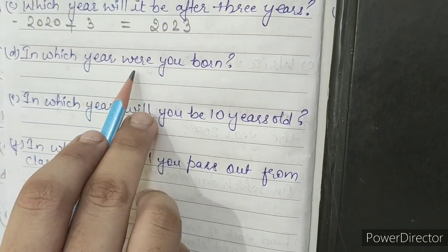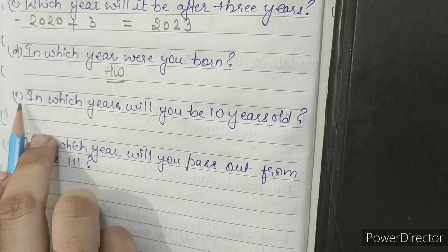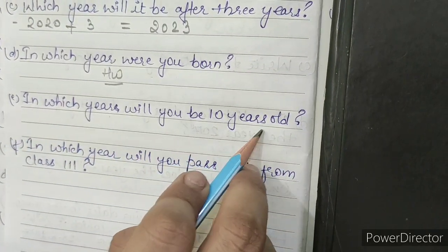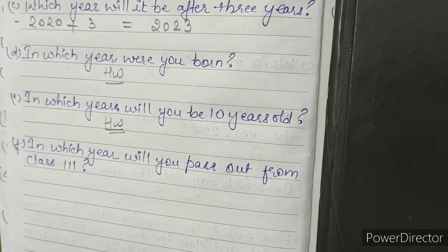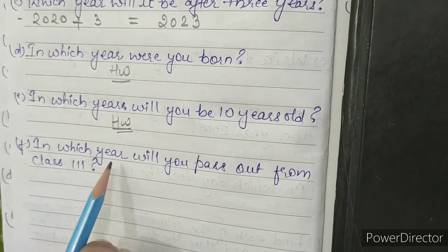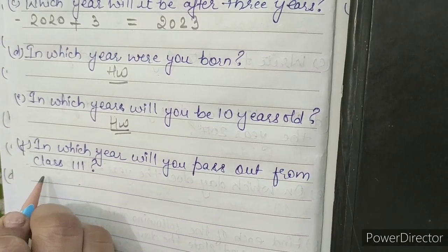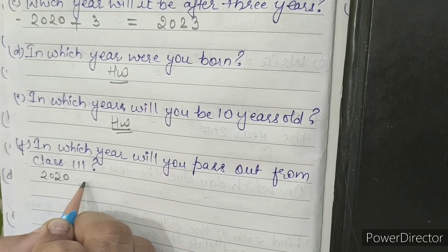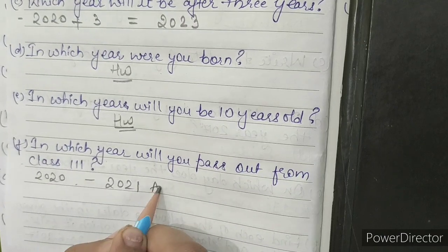D. In which year were you born? This is your homework. E. In which year will you be 10 years old? This is also homework — you have to do both these questions on your own. F. In which year will you pass out from class 3? Present year is 2020, so next year you will pass out: answer is 2021.